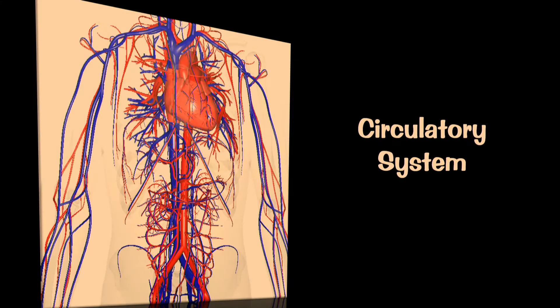The circulatory system is a network of transportation vessels responsible for delivering materials to and from the 100 trillion cells in your body. Materials are transported for the respiratory system, the digestive system, the excretory system, and the endocrine system. To accomplish this monumental task, the adult body was equipped with close to 100,000 miles of blood vessels.